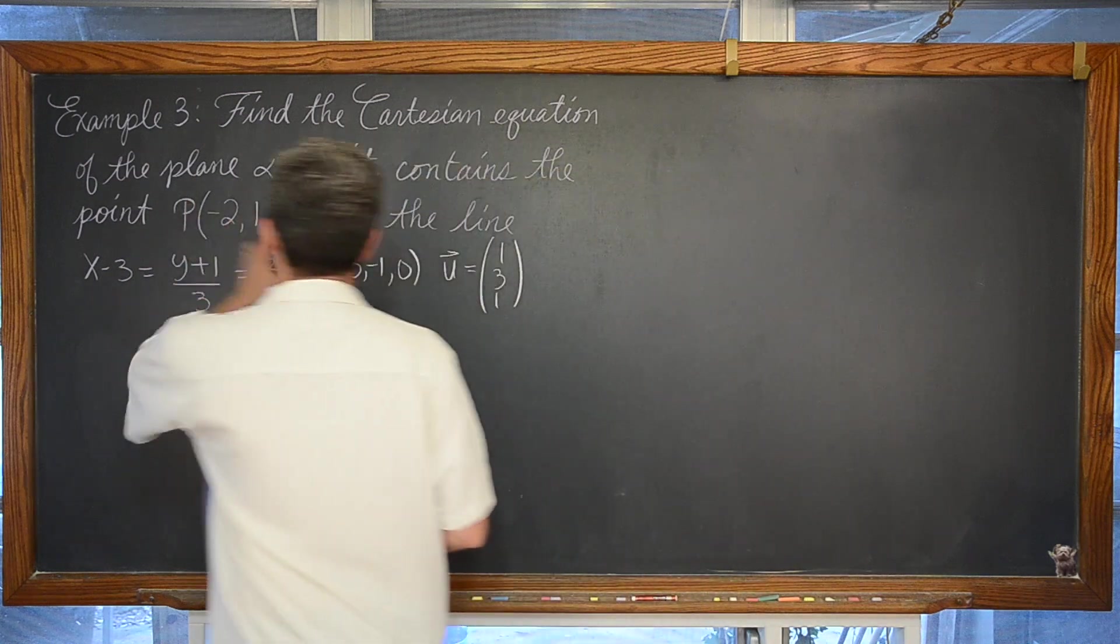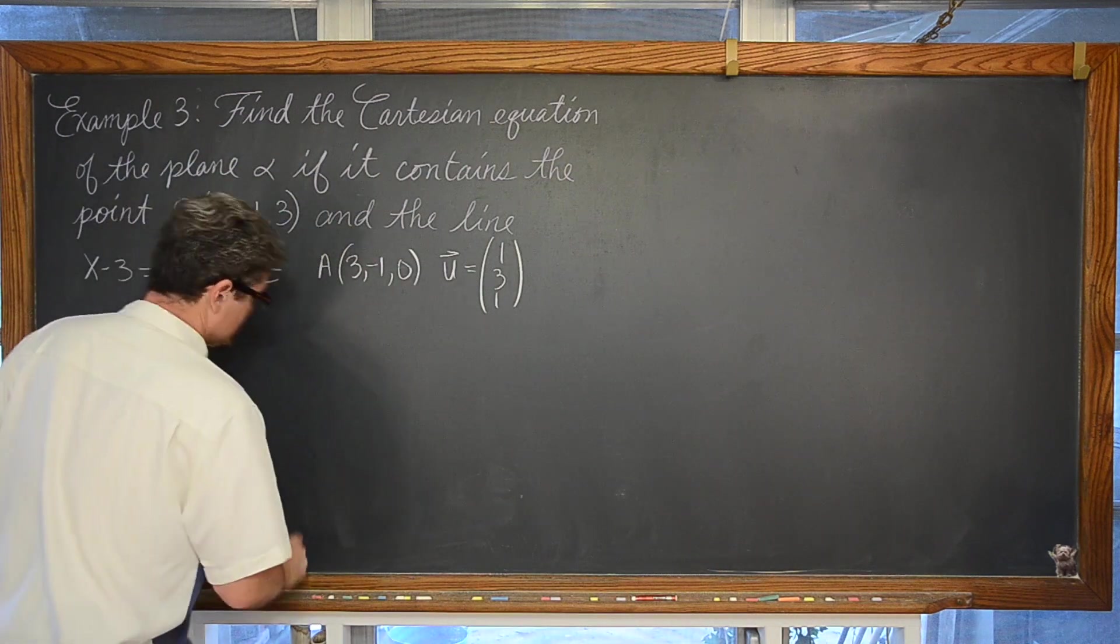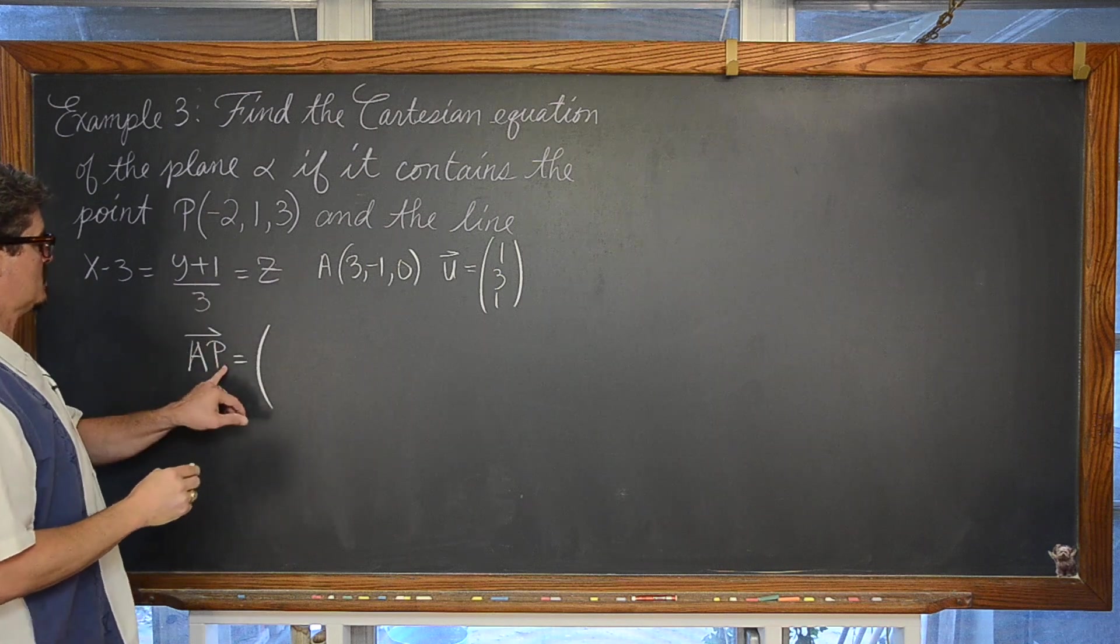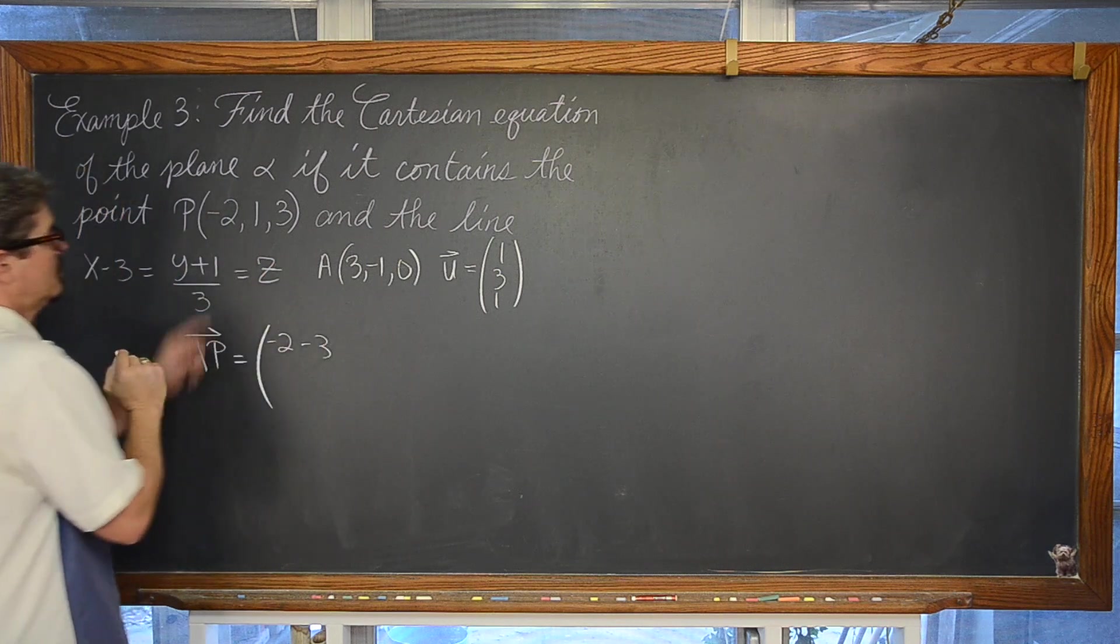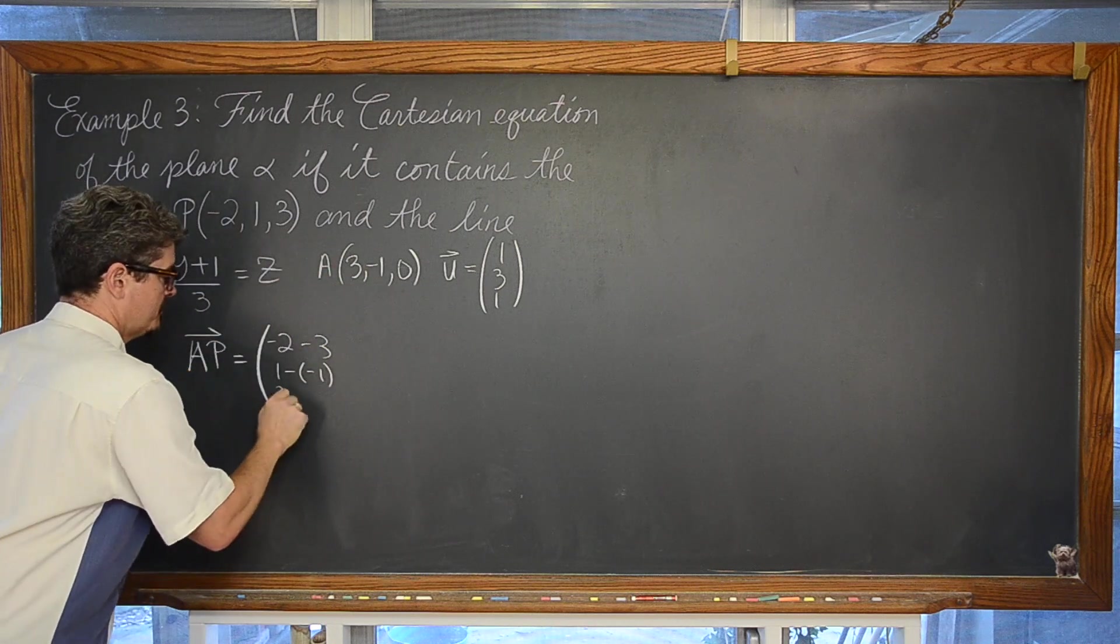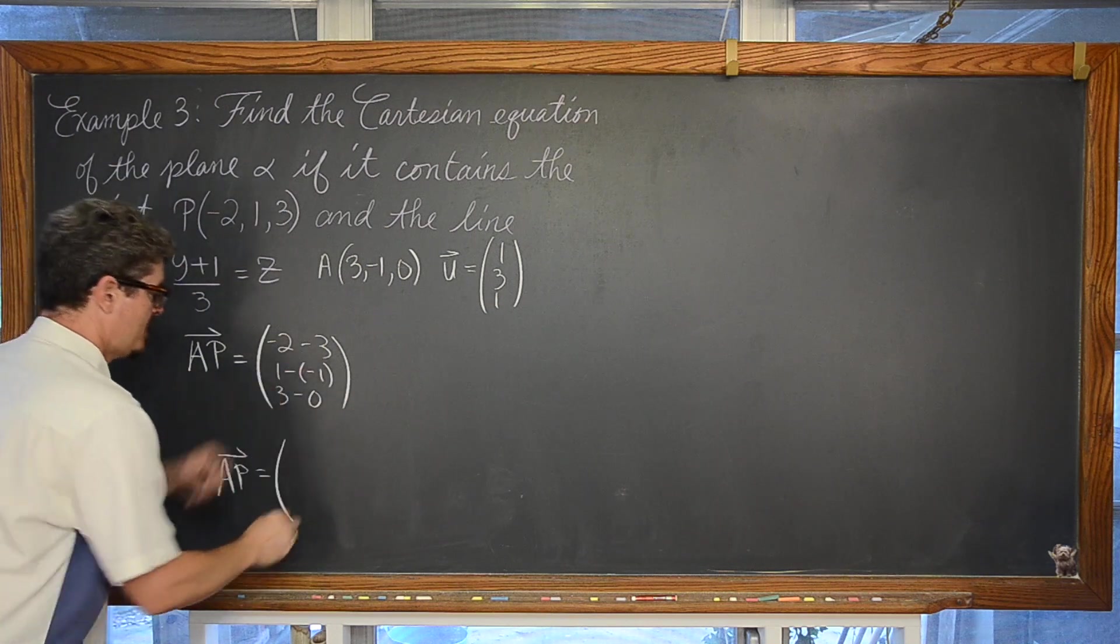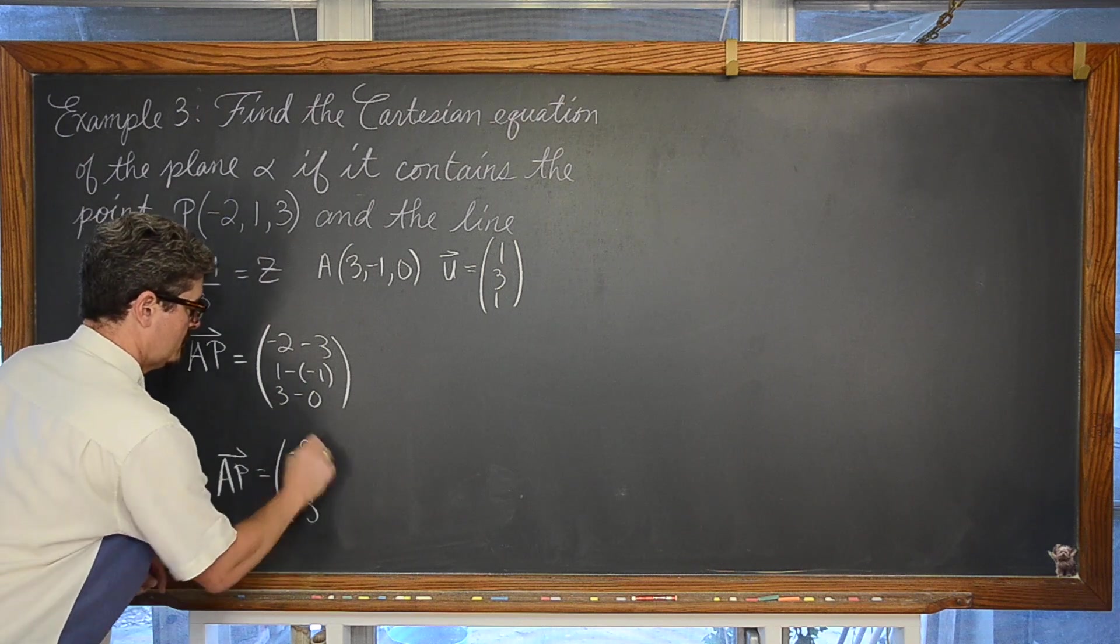Well, we have that. We have two points that are in the plane. So we can find vector AP, which is going to be terminal minus initial, negative 2 minus 3, 1 minus negative 1, and 3 minus 0. And so we have vector AP is equal to negative 5, 2, and 3.